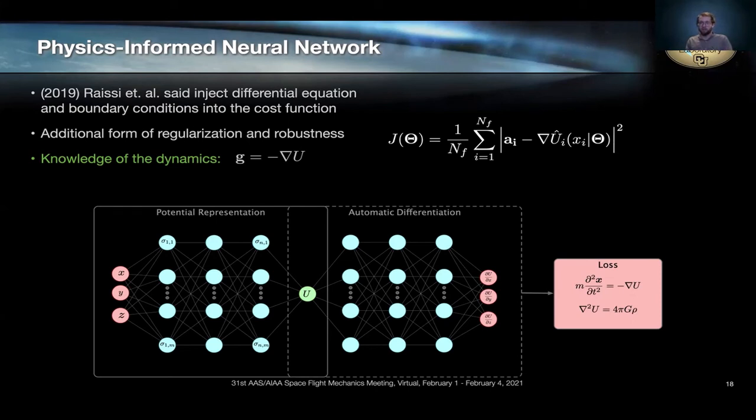And says, hold on a second, we can impose that these networks are a solution to Laplace's equation, specifically by injecting the differential equation into the cost function. So what I mean by that is, in this case, we're providing the input position vector, and we're mapping instead of the acceleration to the scalar potential. And we know that the gradient of this potential gives us our acceleration. So we can take that gradient using automatic differentiation, a tool built into all ML frameworks, and then we can compare this generated predicted acceleration with the observed accelerations and update the weights accordingly. And in this way, we're enforcing that the solution, whatever representation the neural network comes up with, obeys Laplace.